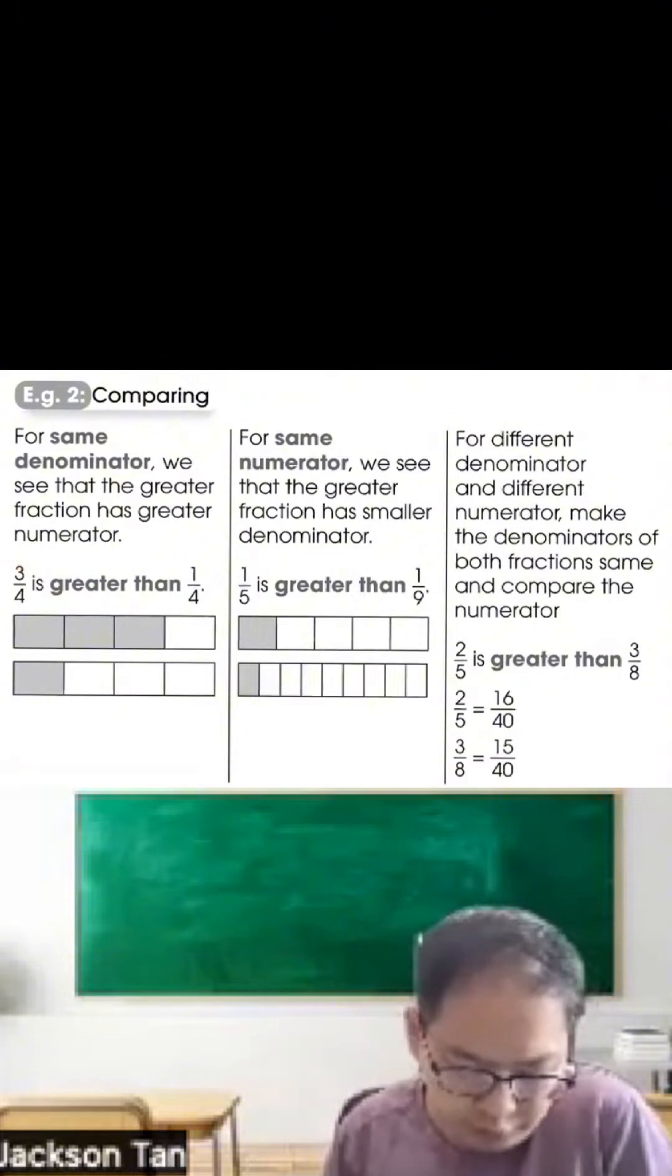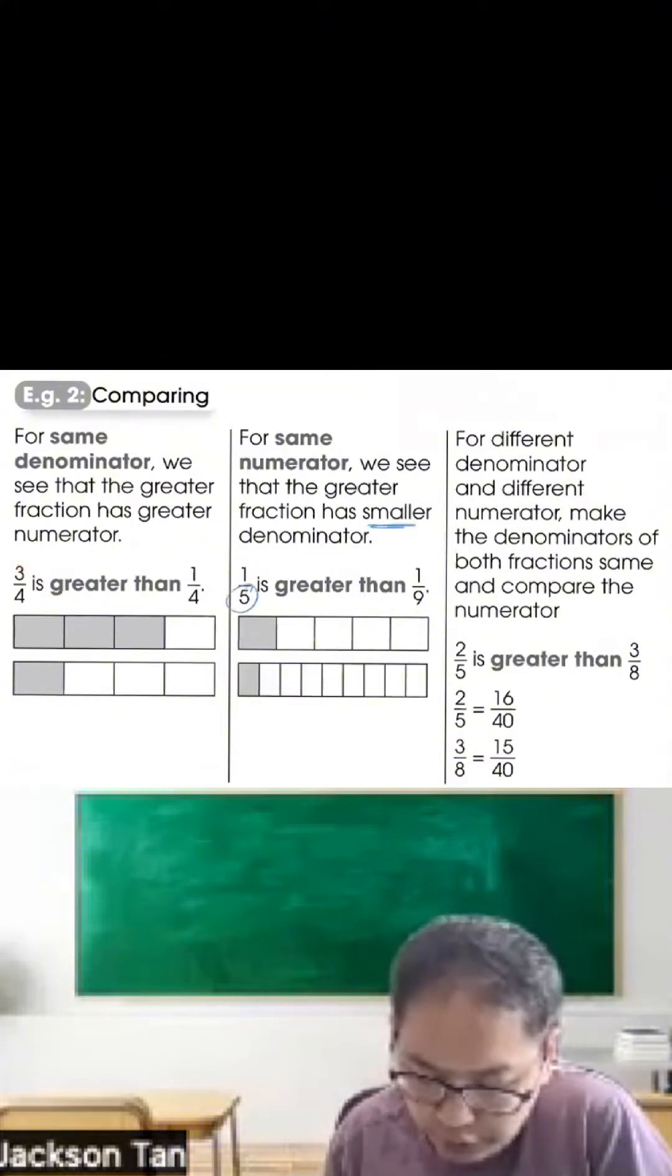If the numerator is the same, then it's the other way around. We make sure that the greater fraction is the one that has a smaller denominator. So 1 out of 5 is greater than 1 out of 9.